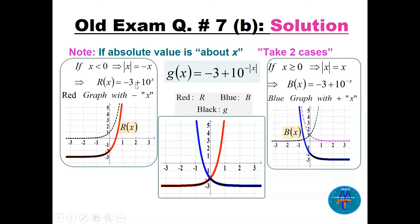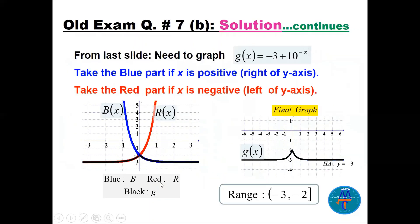When x < 0, |x| = -x, so the function becomes -3 + 10^(-x), which is a decreasing exponential shifted down three. Take only the negative x portion — shown in red on the left. Together, the blue right side and red left side form the final graph of g(x) = -3 + 10^(-|x|). The range is (-3, -2].